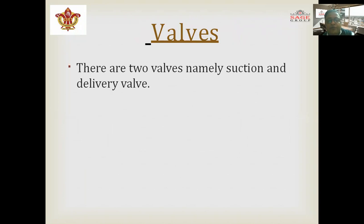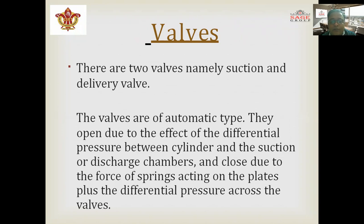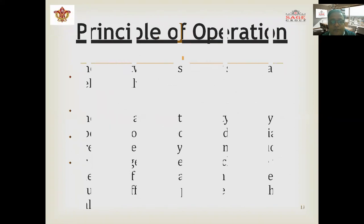There are two types of valves used in the engine cylinder: one for incoming air and one for discharging compressed air. The valves are automatically actuated by the effect of differential pressure between the cylinder and the suction or discharge chamber, and close due to the force of a spring acting on the plates plus the differential pressure across the valve.